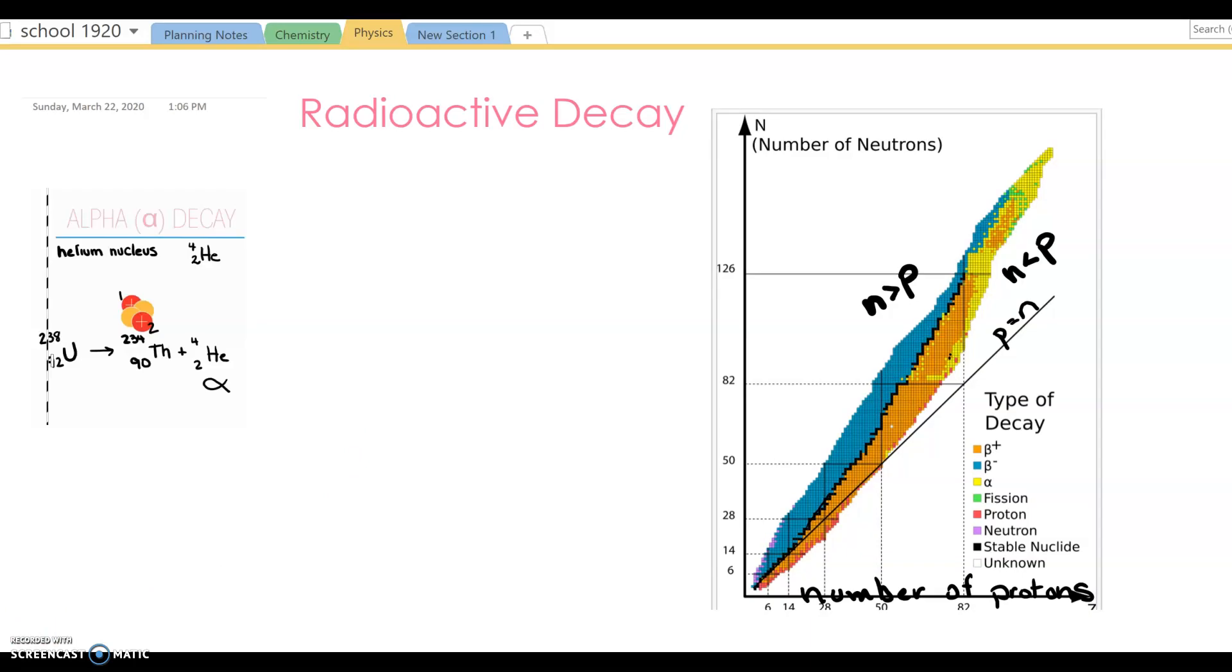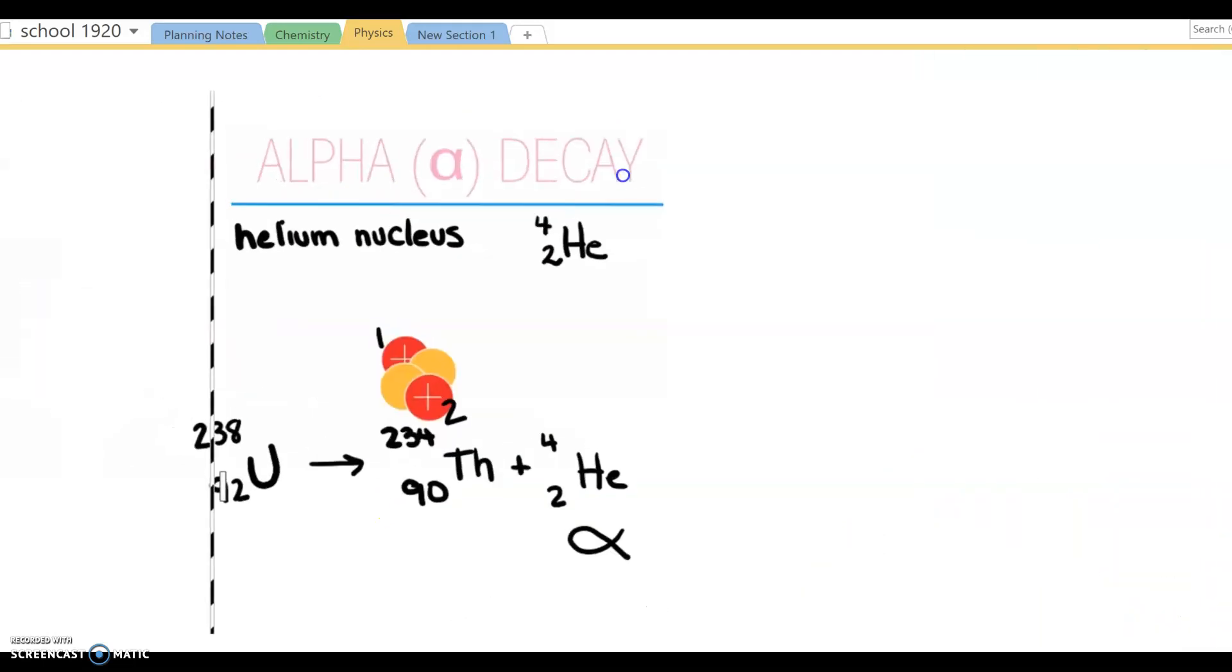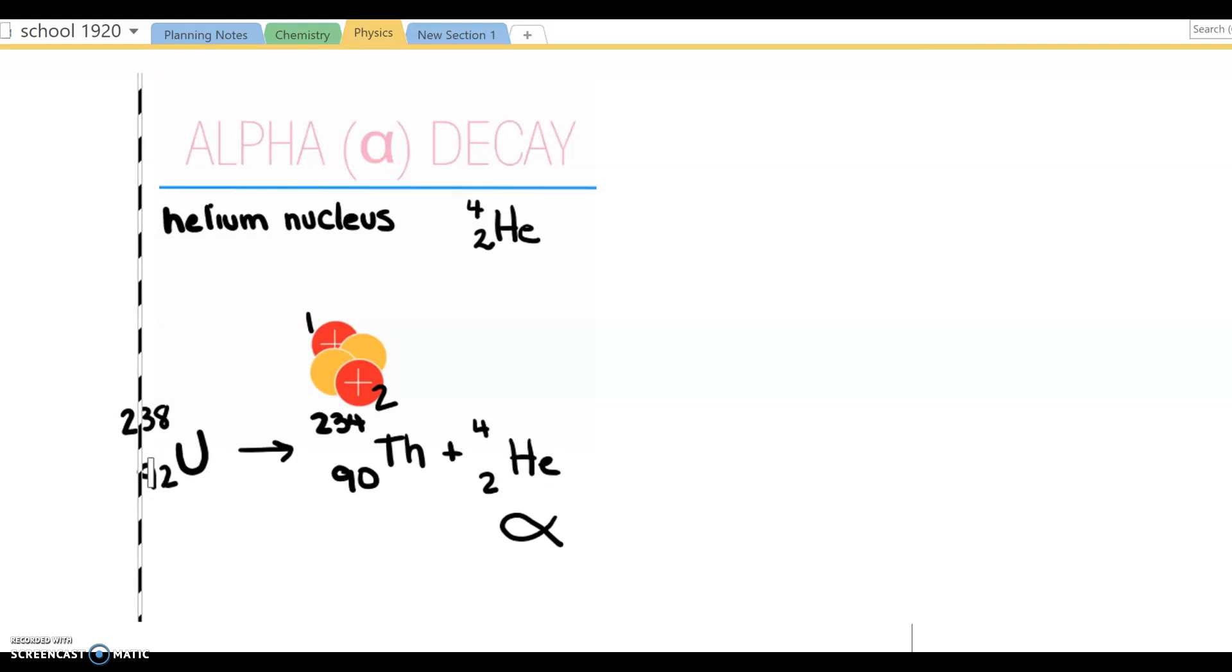Let's look closely at alpha decay. Alpha decay is the emission from very large unstable isotope nuclei of two protons and two neutrons. And the element that has two protons in it is helium. So we often represent an alpha particle as the isotope symbol for helium. Two protons, two neutrons for four nucleons with a mass number of four.